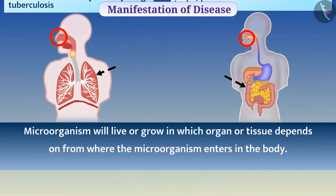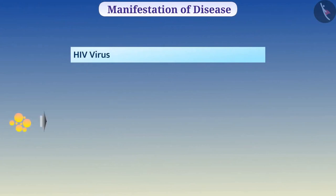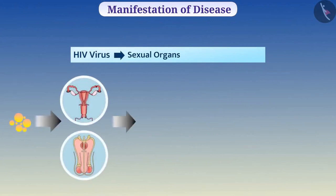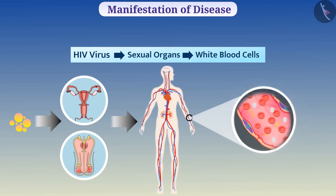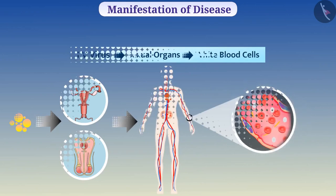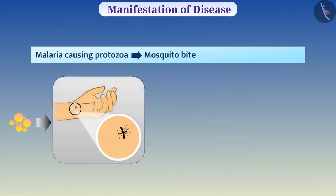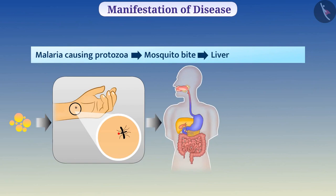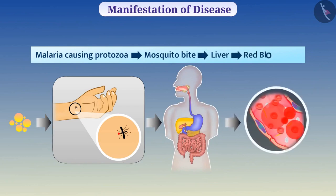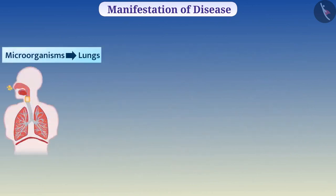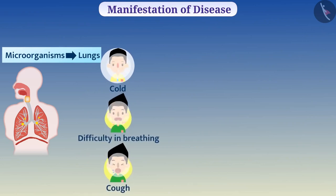For example, HIV virus enters the body via sexual organs and grows inside white blood cells. Similarly, malaria-causing protozoa enter through a mosquito bite and live in the liver, and after that grow inside red blood cells. If microorganisms live in the lungs — that is, if the lungs are the target — then the symptoms will be cold, difficulty in breathing, cough, etc.